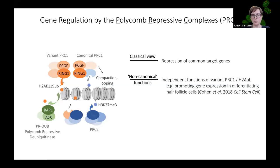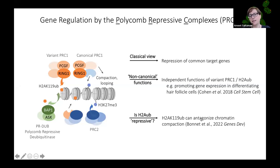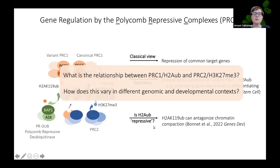There are also non-canonical functions of variant PRC1 and H2A ubiquitylation that are independent of repression — for example, promoting gene expression in differentiating hair follicle cells. Whether H2A ubiquitylation is a repressive mark per se is also unclear. While it can recruit PRC2 with a repressive role, recent work shows that H2AK119 ubiquitylation can antagonize chromatin compaction. Key questions remain about the relationship between PRC1 and PRC2 marks and how this varies across genomic and developmental contexts.